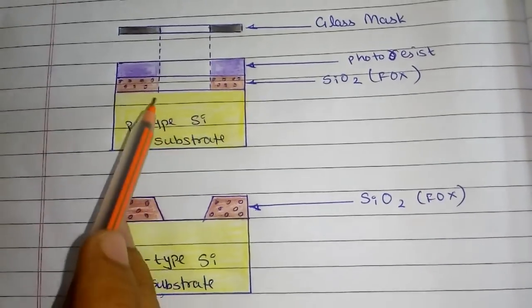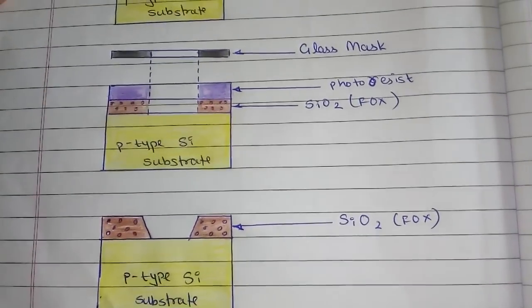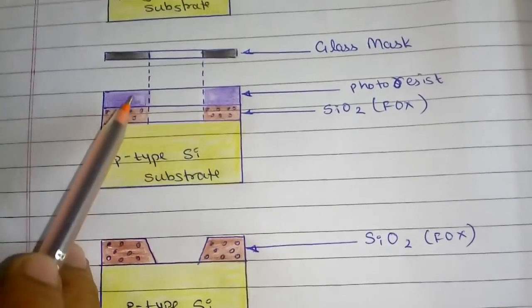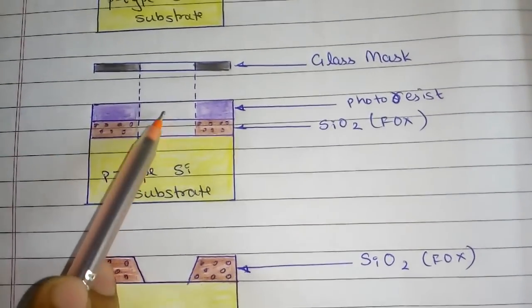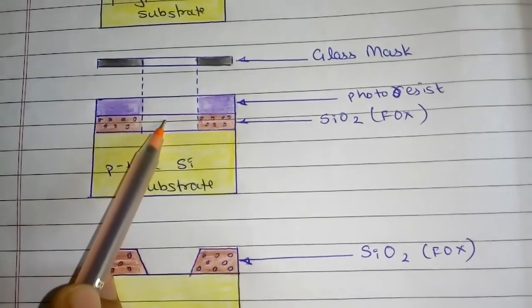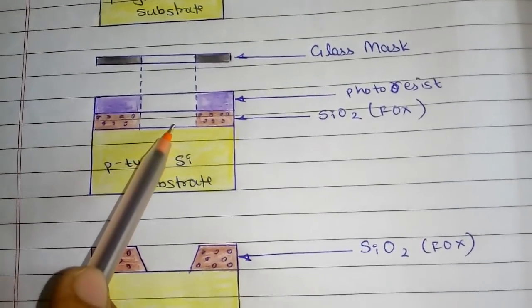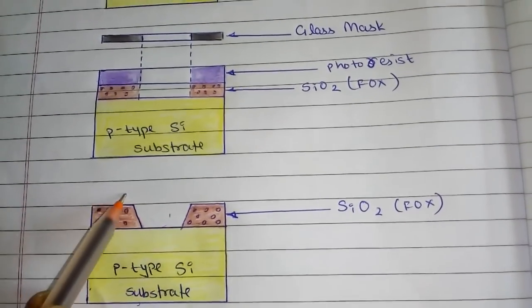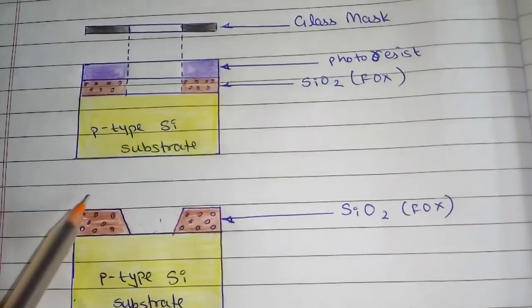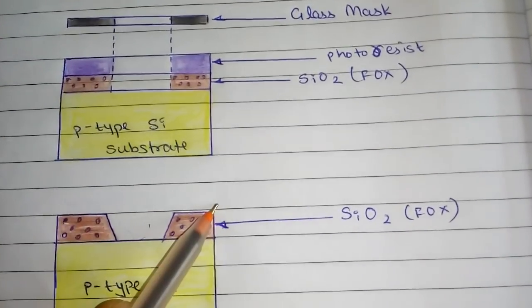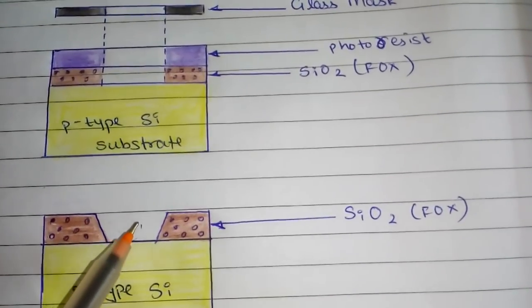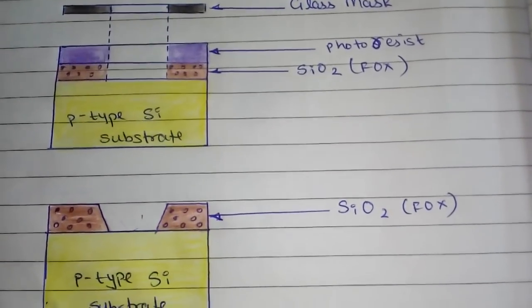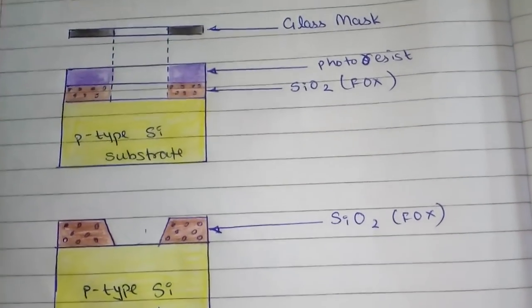After lithography we get a wafer with the p-substrate and SiO2 layer patterned. There is photoresist left in certain areas. We then remove this remaining photoresist using a different solvent — not HF but some other solvent — to complete the lithography step.